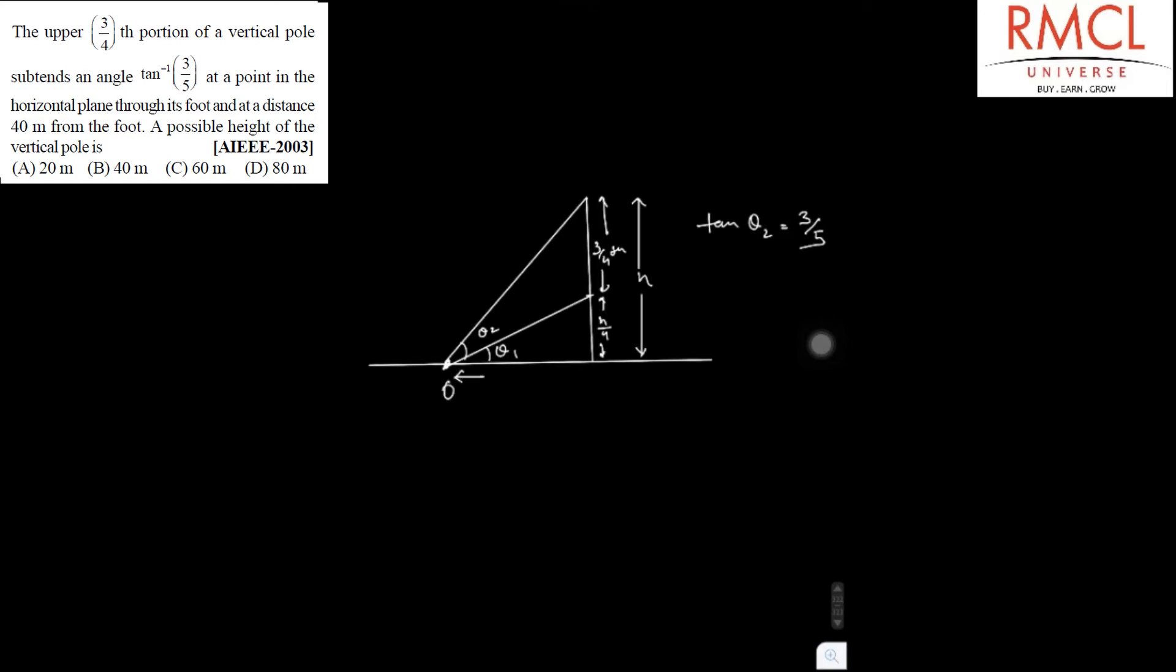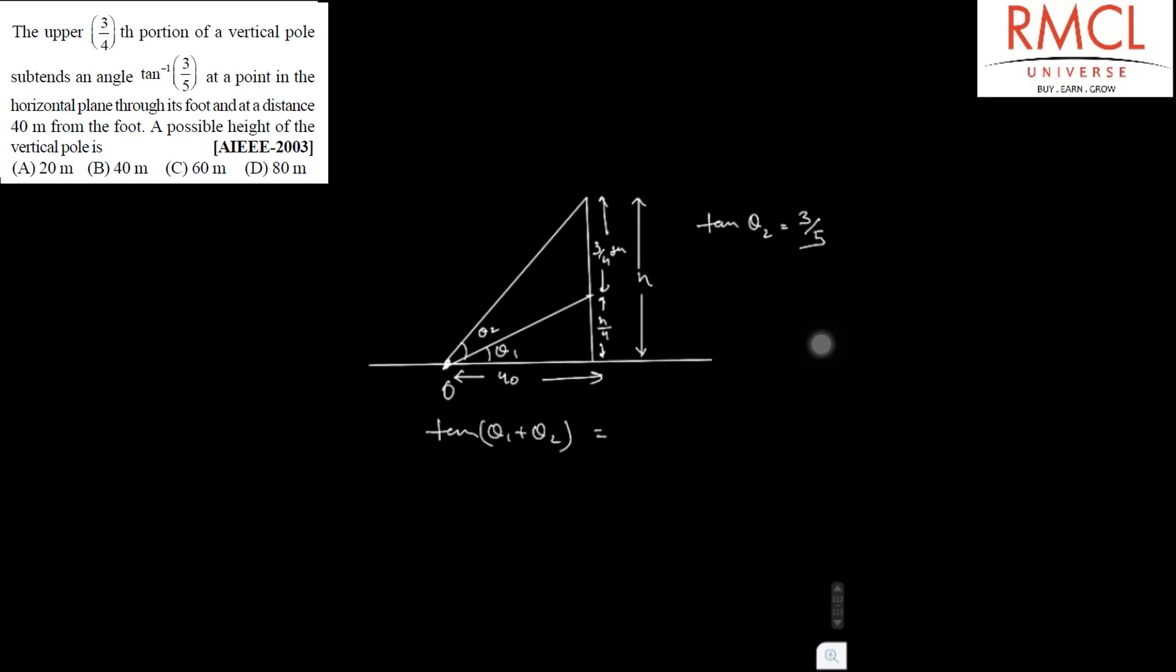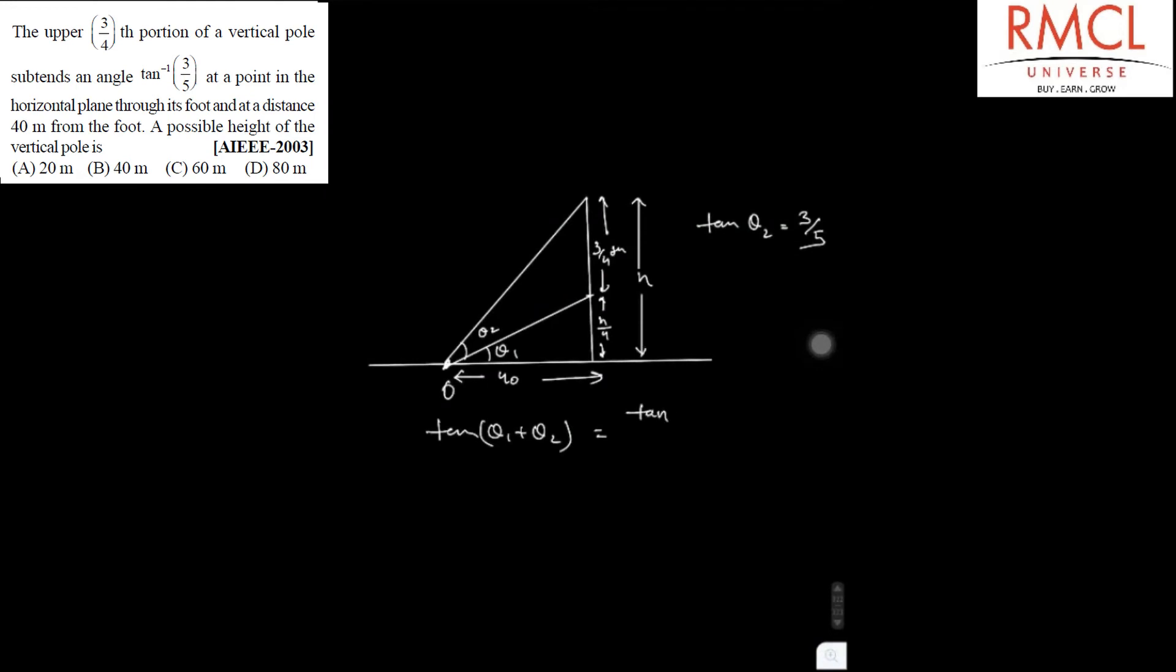So we can say that tan theta 1 plus theta 2 is equal to tan theta 1 plus tan theta 2 divided by 1 minus tan theta 1 tan theta 2. So we know that the tan theta 1 is h by 4 multiplied by 40. So this is h by 160.